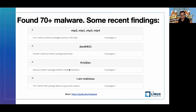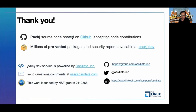We used Package to perform continuous vetting of PyPI packages. Over 330,000 packages have been analyzed and we found over 70 malicious packages, which have been reported. Some recent findings are listed, and you can visit package.dev/malware for details. Package source code is hosted on GitHub and we are accepting contributions. Security reports are available for free at package.dev, powered by Ausbit. Send your questions and comments to oss@ausbit.com. Thanks.